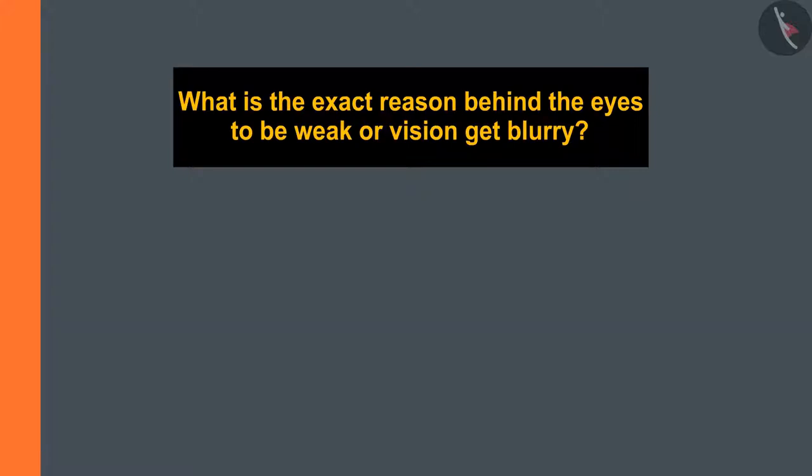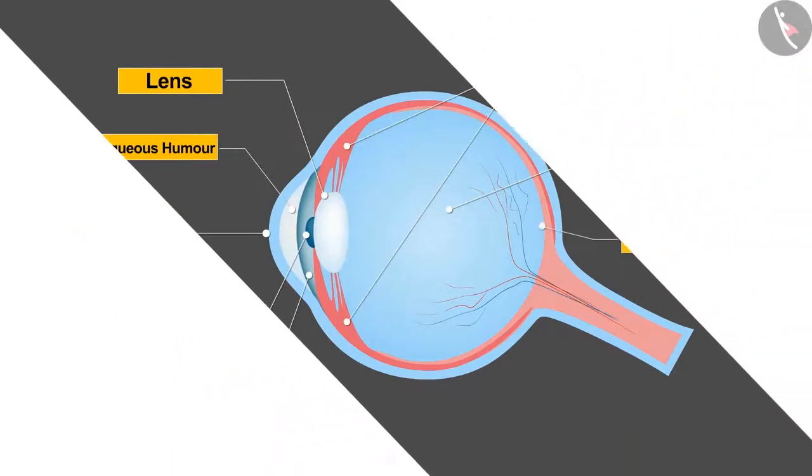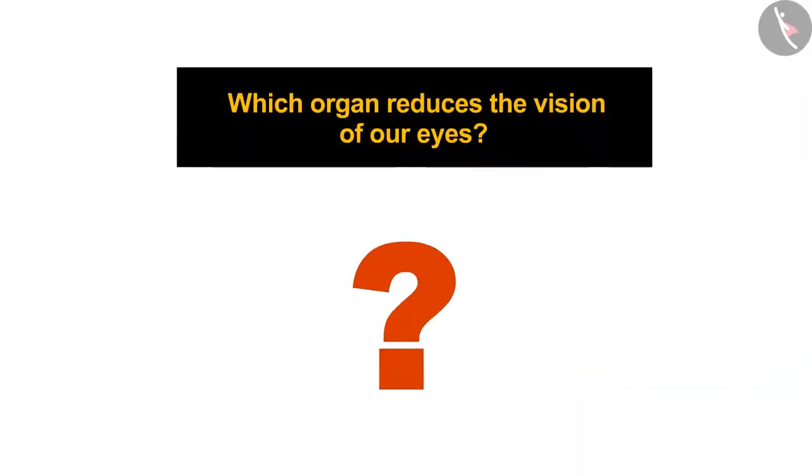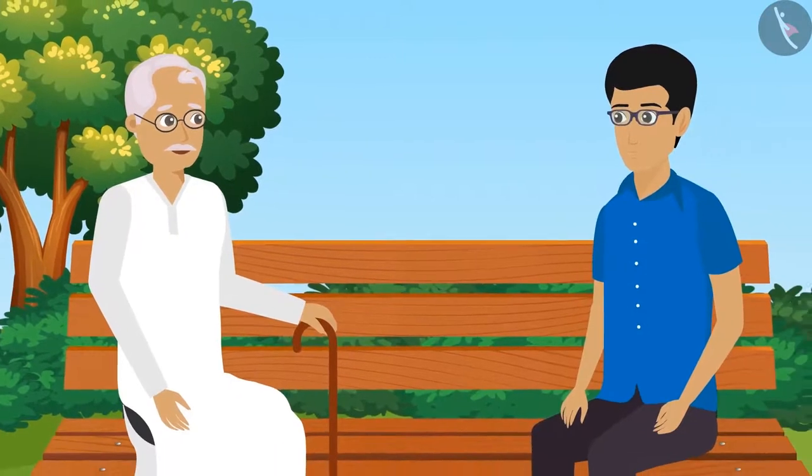In our previous video we learned about the various organs of the eyes. But weakening of which organ reduces the vision of our eyes? Stay tuned till the end of the video to find answers to some similar questions.